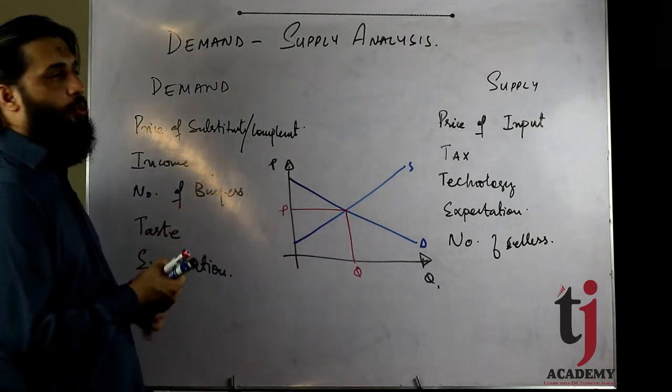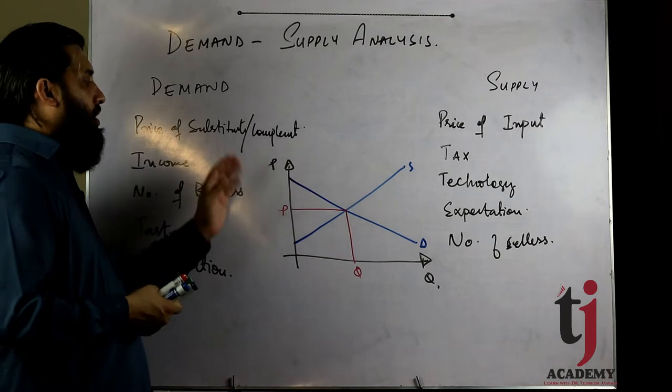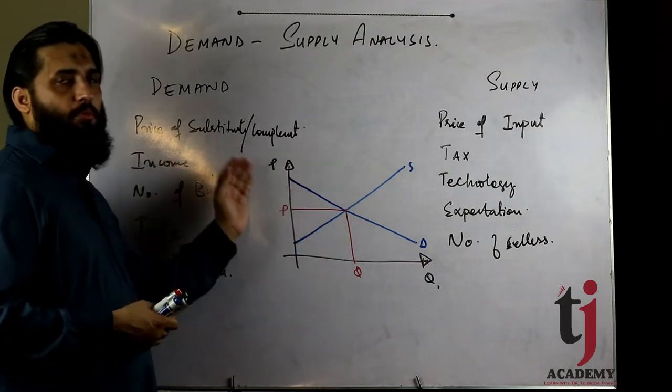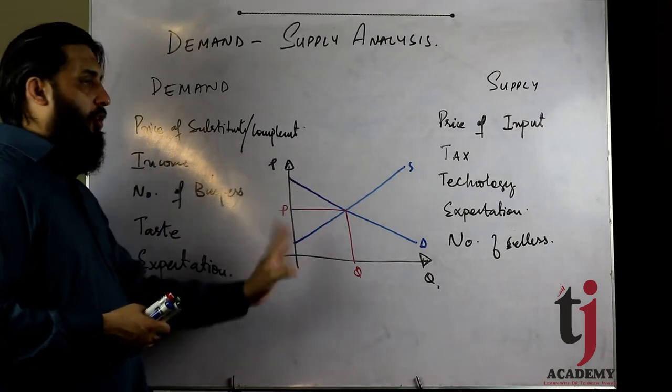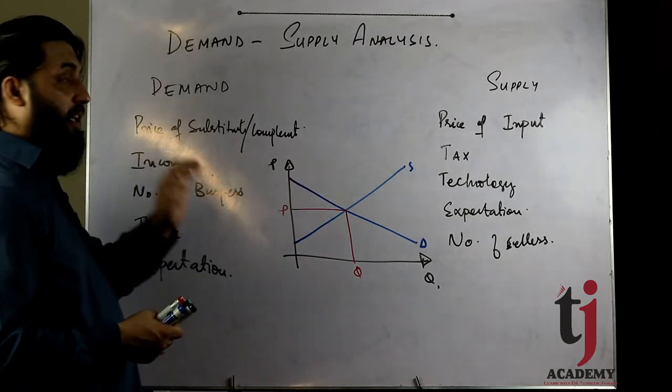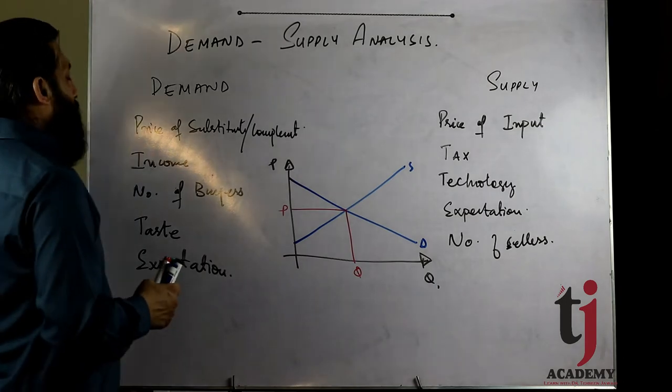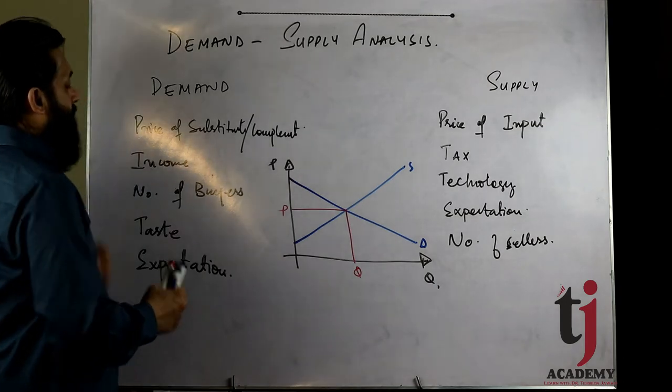अब जब price का effect हम देख चुके हैं — price अगर change होगी तो along-the-curve movement होगी। यहाँ भी along-the-curve movement। अब हम बात करना है other factors की — हम assume करते हैं different cases में।